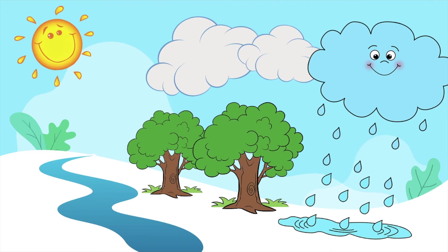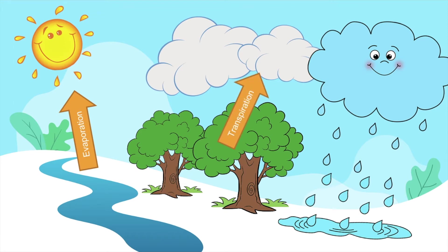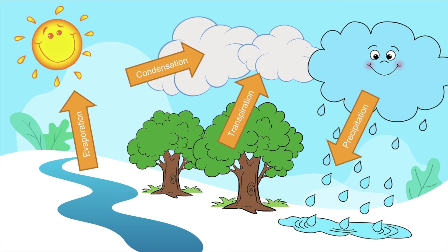Here's a diagram of the water cycle. First off, the sun starts the process — it heats up the water and the water molecules begin to rise; that's called evaporation. Trees, through their leaves, give off water they didn't use in the photosynthesis process, and we call that transpiration. Then the water starts to condense and form clouds — condensation. And then the water falls back to the earth in the form of precipitation, and it accumulates in our ponds, rivers, lakes, and oceans.